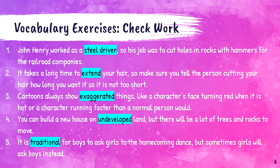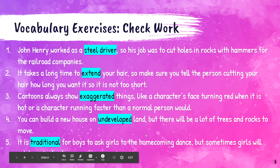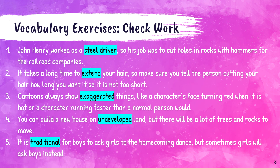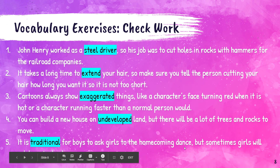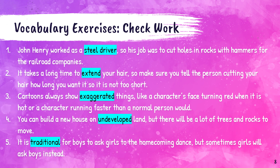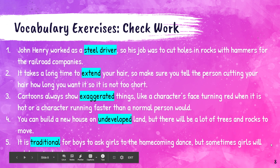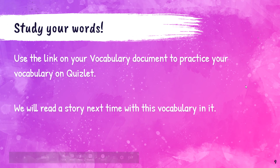Number five: it is traditional for boys to ask girls to the homecoming dance, but sometimes girls will ask boys instead. We know it's 'traditional' because it talks about something that is done often. Traditional doesn't always necessarily mean it's what everyone does, but it's what a lot of people do. At the bottom of your notes paper, you will see a link on your vocabulary document to practice your vocabulary on Quizlet. Next time I'm going to read a story along with you called John Henry.